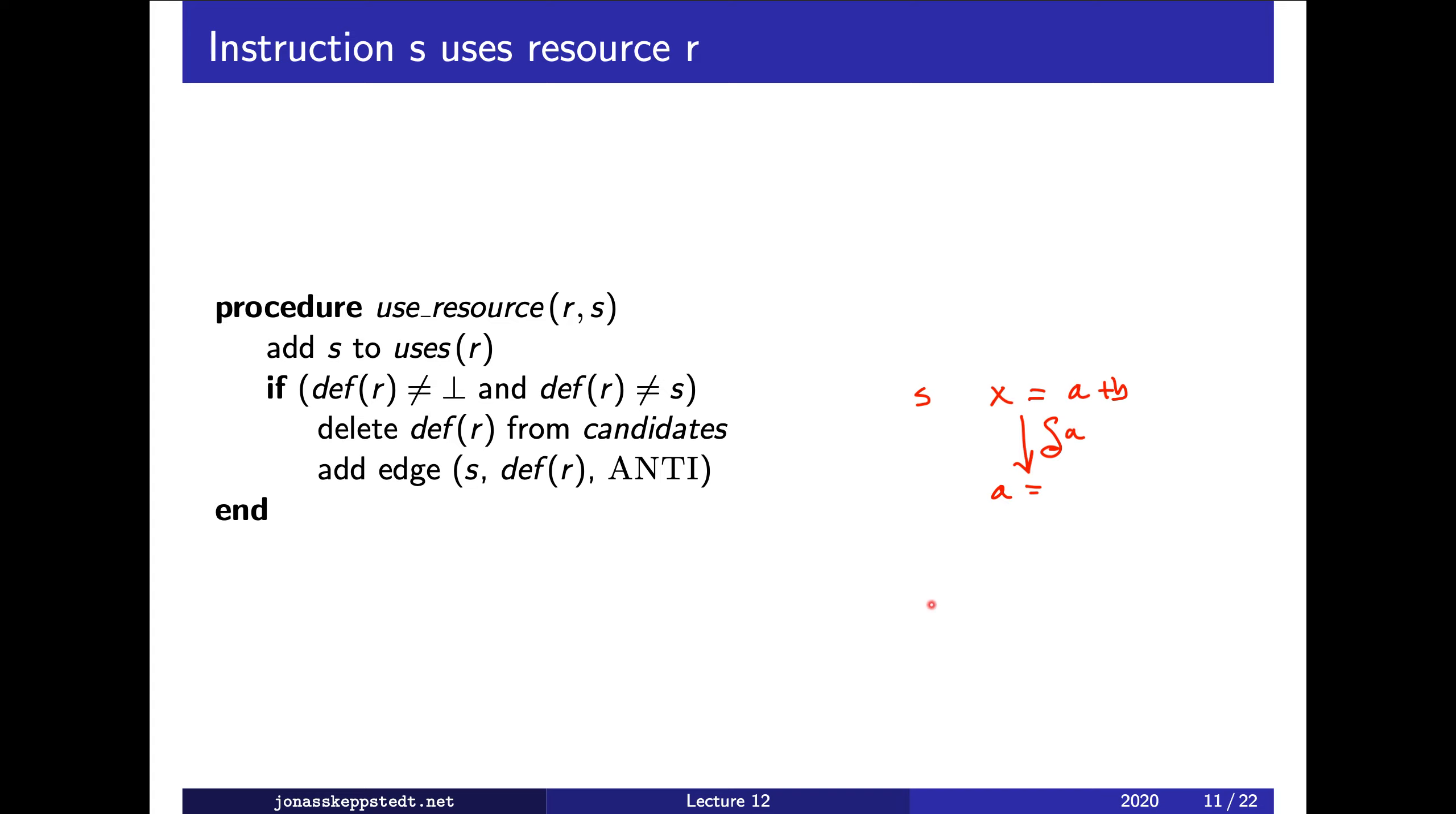If we would have had x equals x plus one instead, then def(x) would have been s when we come here. And so we add s to the uses. And we also check if we should create this anti-dependence edge. But we should not because we cannot be dependent on ourselves. So therefore we have this test.